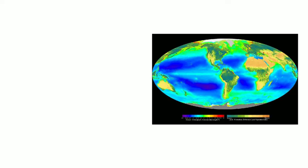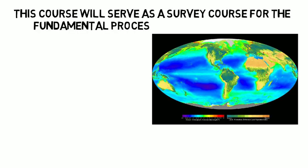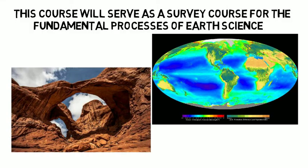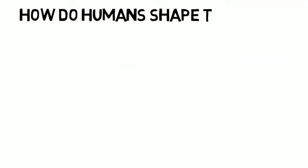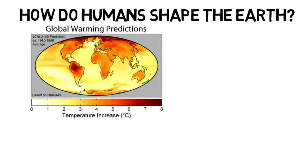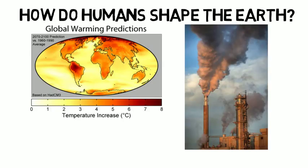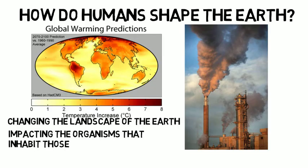In your first year you will set the foundation for your learning by taking an Introduction to Earth Science course. This course will serve as a survey course for the fundamental processes of Earth Science, and will cover how geological, geographic, soils, and human factors all play a role in shaping the Earth. For example, if you think about how humans shape the Earth, one concept that probably comes to mind almost immediately is our role as humans in climate change.